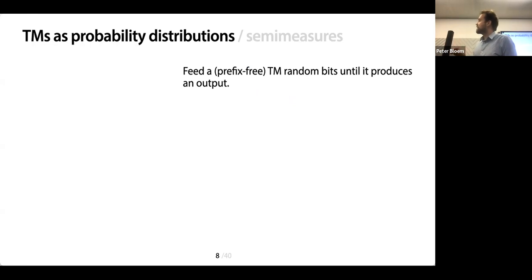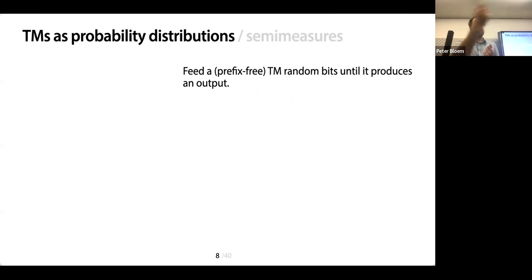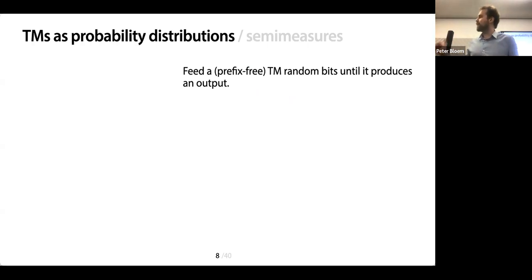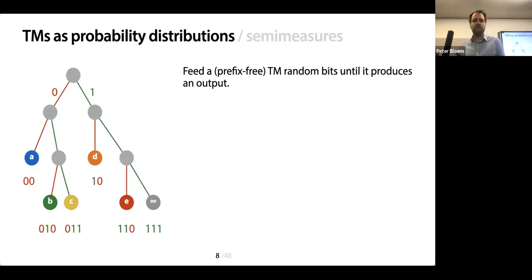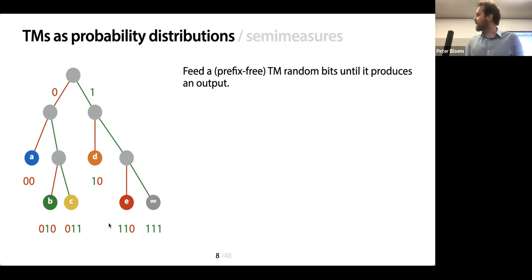The next thing we need is to turn these Turing machines into probability distributions — or more accurately, semi-measures. The simplest way is to feed random bits until it produces an output: we wait until the Turing machine starts to read from the input tape, flip a coin, and put a random bit on there. At some point it's going to spit something out, or compute forever. We are thus sampling from a probability distribution. We call them semi-measures because with some probability the Turing machine will run forever, so the total probability mass is actually less than one.